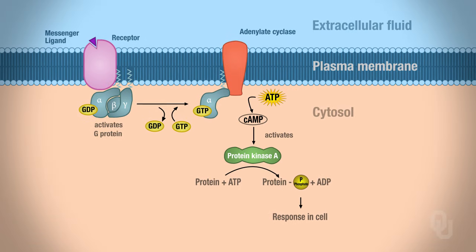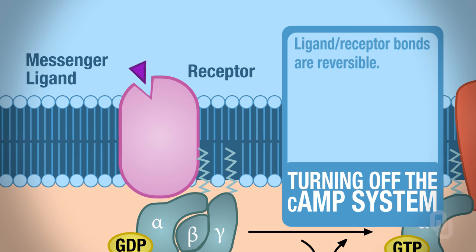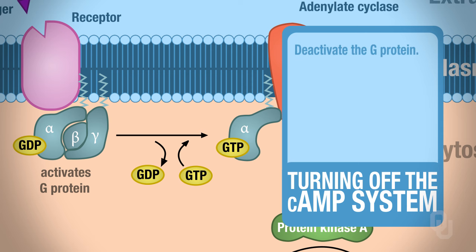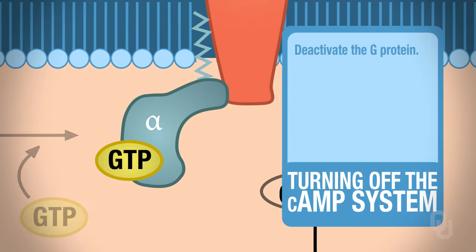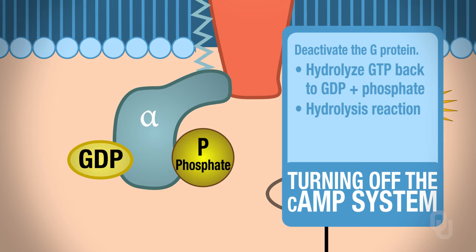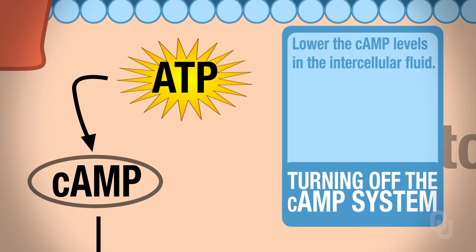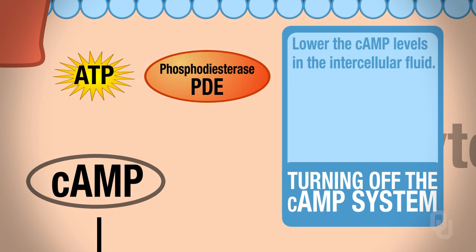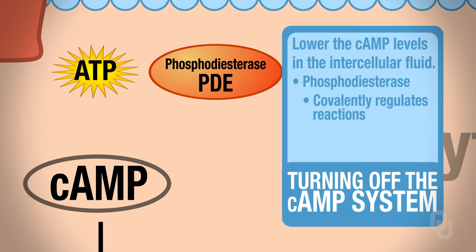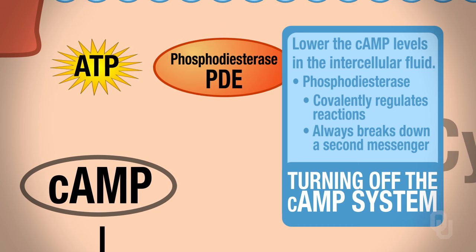How do we turn off the cyclic AMP system? First, remember that ligand binding to the receptor is reversible, so the ligand falls off the receptor. Then we need to deactivate the G-protein by hydrolyzing GTP back to GDP plus phosphate. That's going to lower the levels of cyclic AMP in the intracellular fluid. We use an enzyme called phosphodiesterase, which covalently regulates reactions and always breaks down a second messenger — in this case, cyclic AMP.